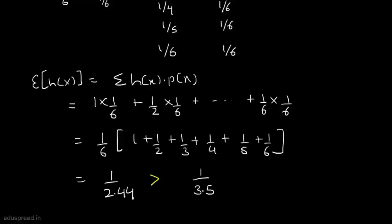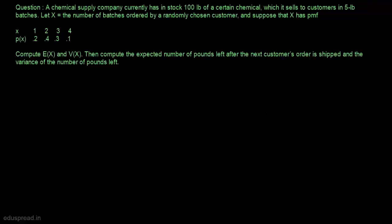Let's move to question number 2. A chemical supply company currently has in stock 100 pounds of a certain chemical, which it sells to customers in batches of 5 pounds. Let x be the number of batches ordered by a randomly chosen customer with the following probability mass function. Compute the expected value of x, the variance of x, the expected number of pounds left after the next customer's order is shipped, and the variance of pounds left.